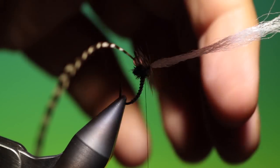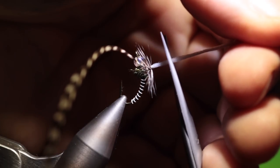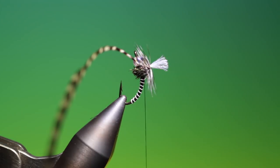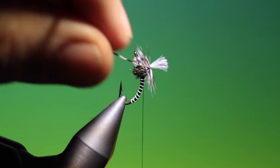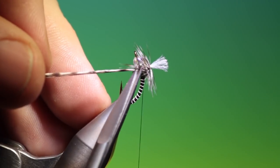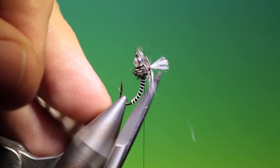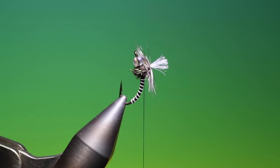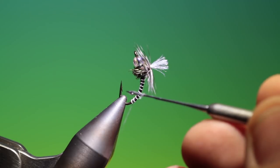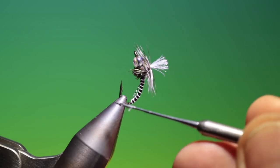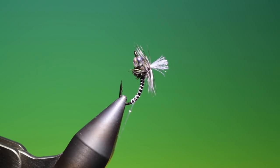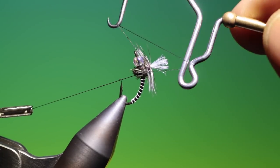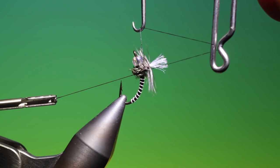We'll trim our post to the size that we want it. That'll do us just fine there. And we'll trim off the remaining hackle. A drop of varnish just here. A whip finisher. Again, under all the fibers.